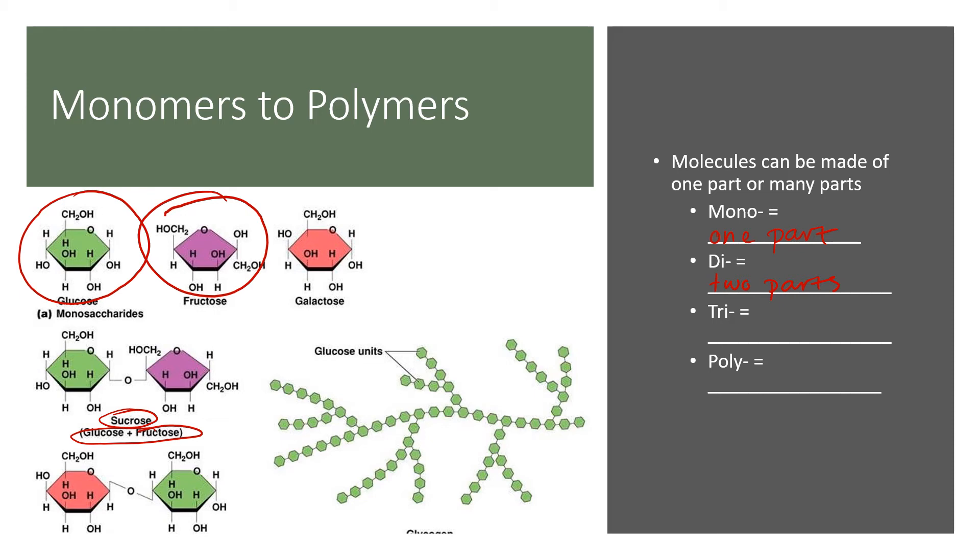Tri refers to three parts. A triglyceride is a fatty acid made up of three glycerols. And poly just means many. Anything over three parts is poly. So monosaccharide, disaccharide, trisaccharide, or polysaccharide. What you have down here, if each one of these little green guys is a glucose, you can see there's like a zillion of them, right? And they all branch off and they're all bonded to one another covalently.